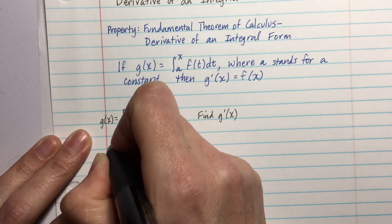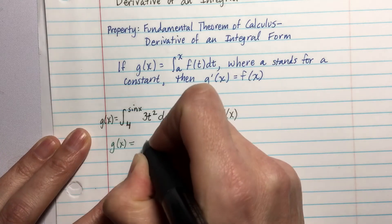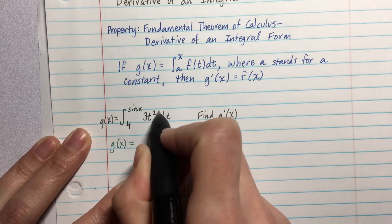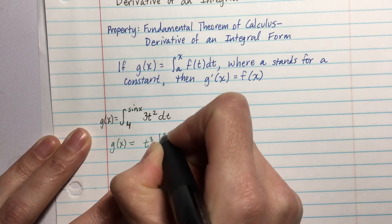So let's just first start by integrating. So we have g(x) equals, if we integrate 3t², we get t³, and our bounds are 4 to sin(x).